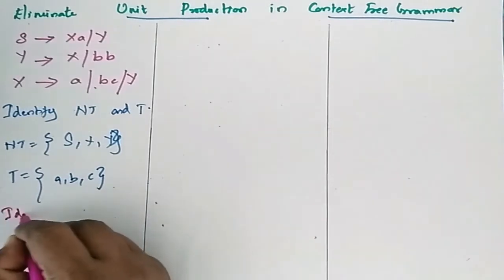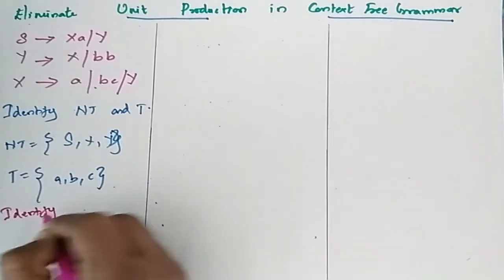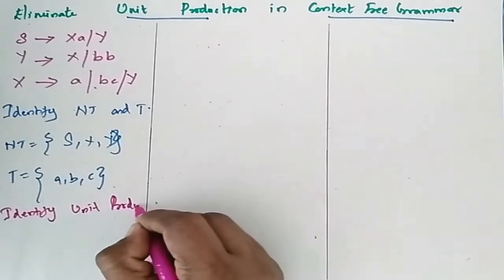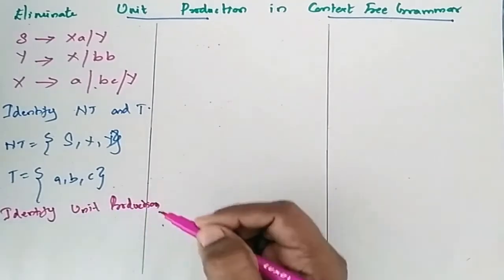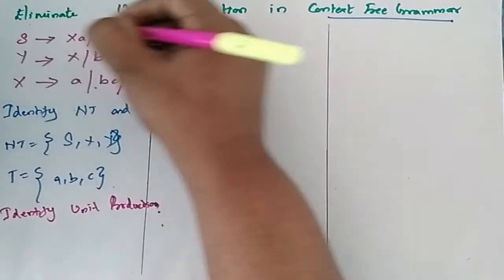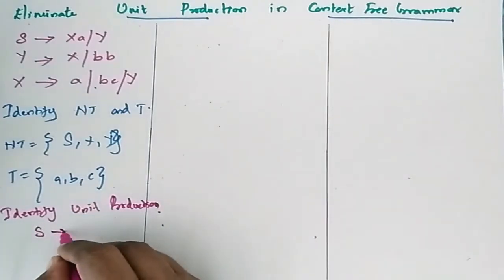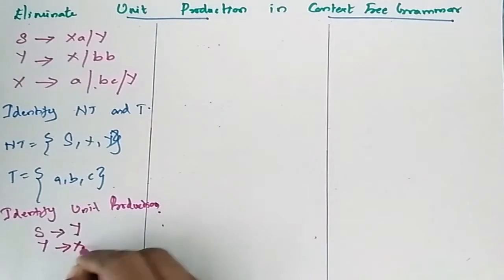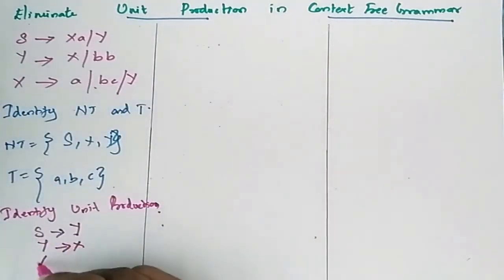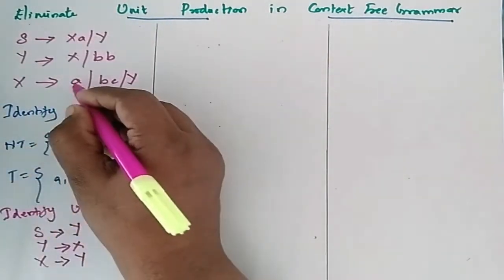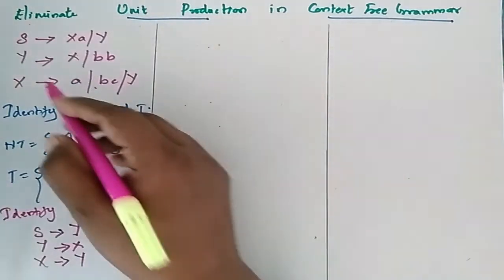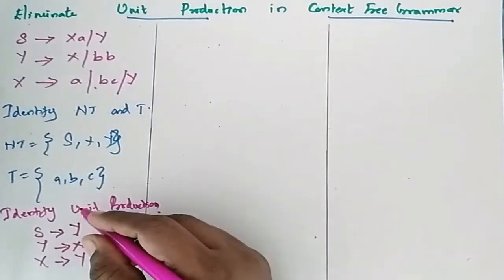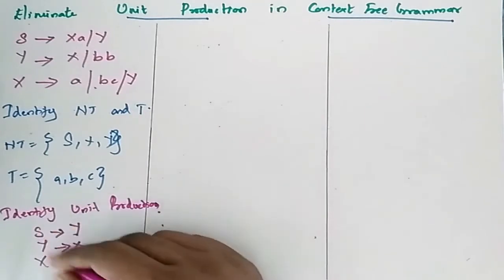Now go for identifying unit productions. S to Y is one unit production. Y to X is another unit production. And X to Y is another unit production. If it ends in a terminal, you need not bother about it. So X to Y is a non-terminal, and we have to remove this.